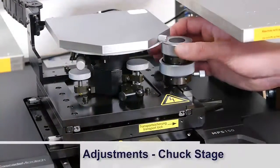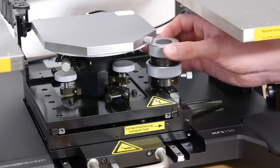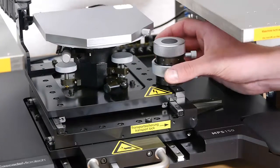To adjust the XY position of the chuck, use the X adjustment knob to move the stage in the X direction and use the Y adjustment knob to move the stage in the Y direction.